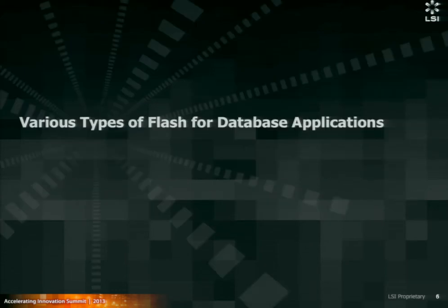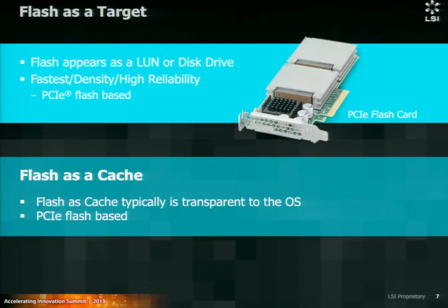So the various types of Flash for database applications. Flash can be presented as a LUN or a disk drive for persisting data. This is the fastest and the most reliable way to implement Flash. A Flash device can also be a cache device which is transparent to the operating system, to the database, and mostly to the DBA.